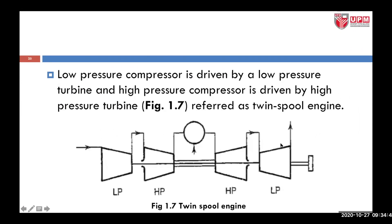For this type of twin spool engine, the low pressure compressor is connected to the low pressure turbine, and the high pressure compressor is connected to the high pressure turbine. There is a different shaft for each compressor-turbine pairing. So the low pressure compressor is driven by the low pressure turbine, and the high pressure compressor is driven by the high pressure turbine.